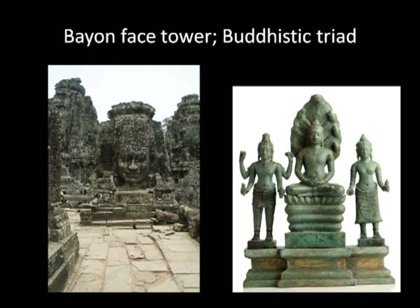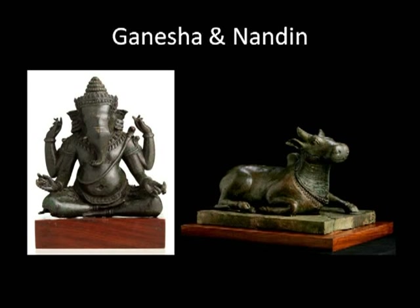At the same time, Brahmanistic images flourished. Both in the exhibition upstairs — you have Ganesha, who has been totally adopted into the Buddhist canon as well as being originally Brahmanistic, and you have the bull Nandi, who is Shiva's mount, the vehicle of Shiva — a very beautiful, lively, and endearingly realistic depiction of a young bull.